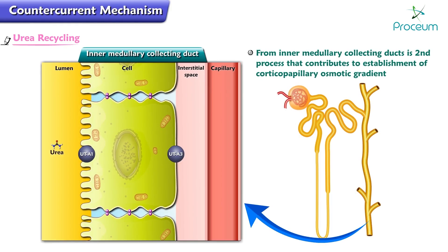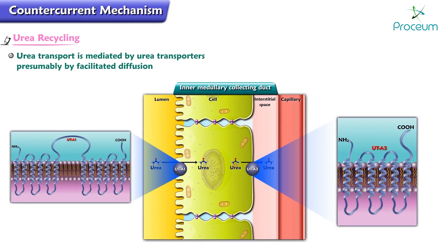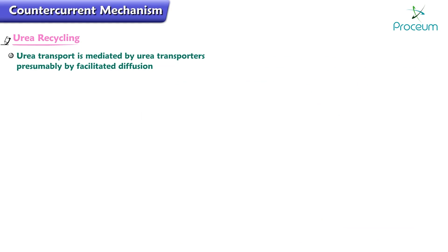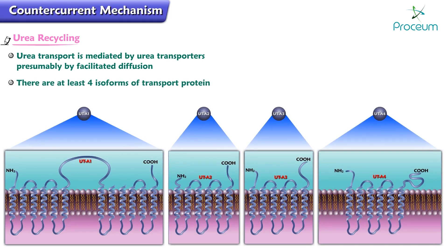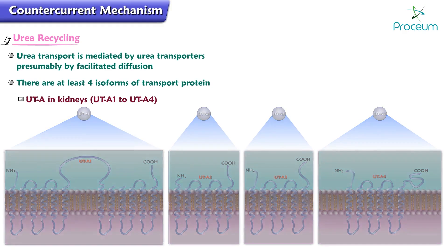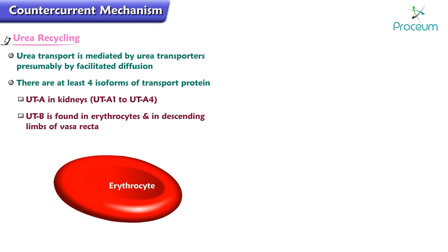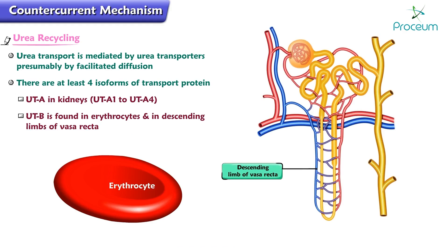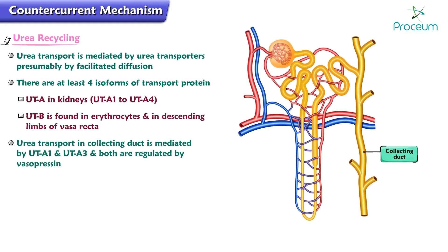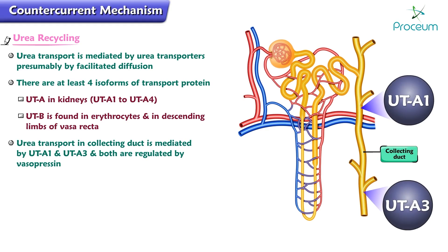Urea recycling from the inner medullary collecting ducts is the second process that contributes to the establishment of the corticopapillary osmotic gradient. Urea transport is mediated by urea transporters, presumably by facilitated diffusion. There are at least four isoforms of the transport protein urea transporter alpha in the kidneys — urea transporter alpha-1 through alpha-4. UT-beta is found in erythrocytes and in the descending limbs of the vasa recta. Urea transport in the collecting duct is mediated by urea transporter alpha-1 and urea transporter alpha-3.